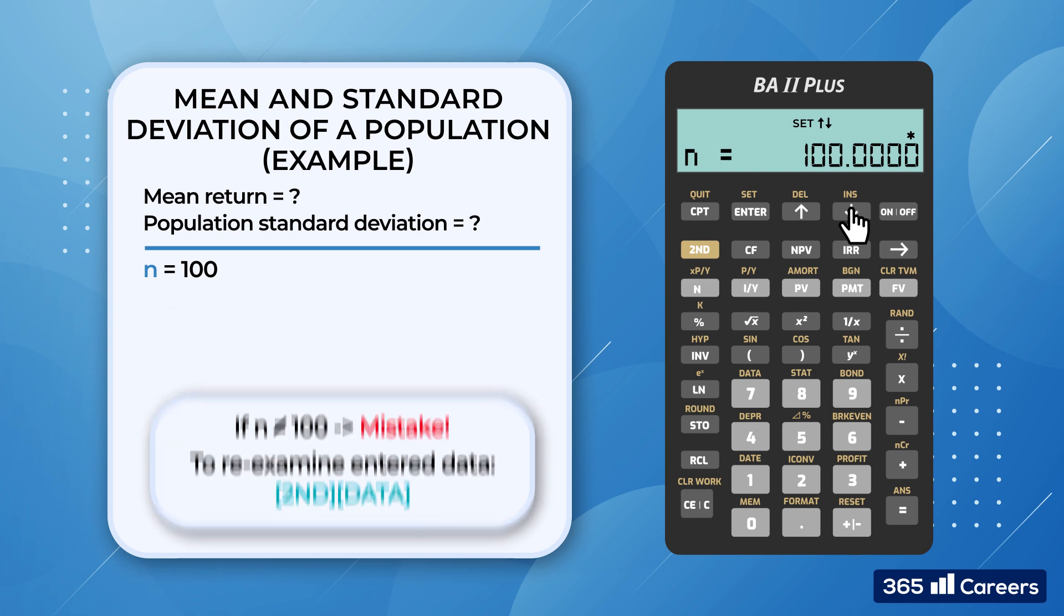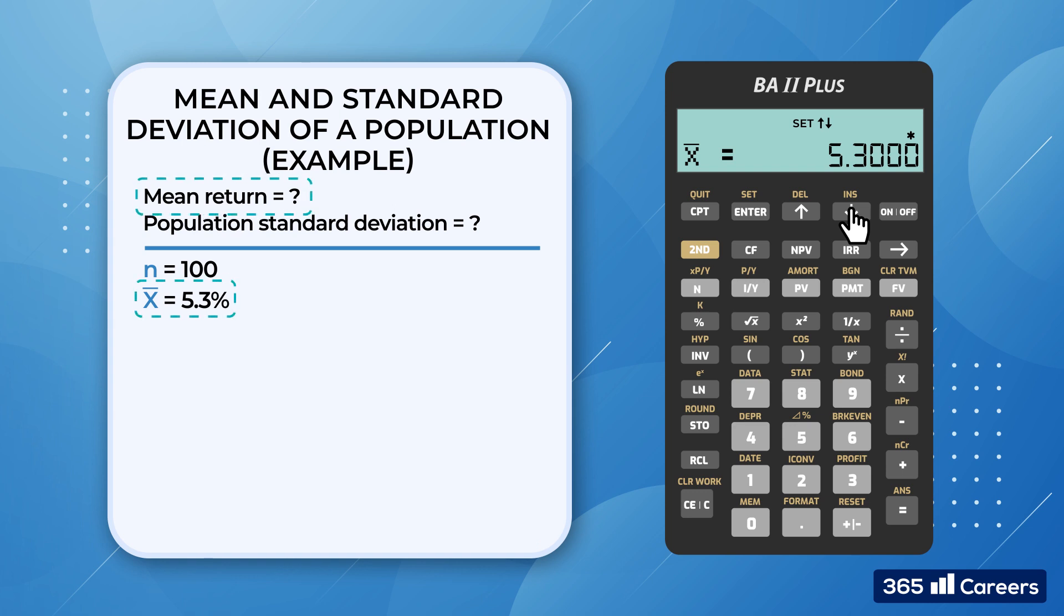In this case, everything seems to be in order, so we scroll down to x-bar, which equals 5.3. This is the weighted average of the three values using the probabilities as weights.